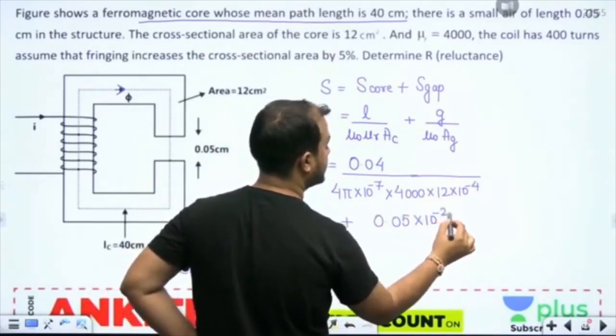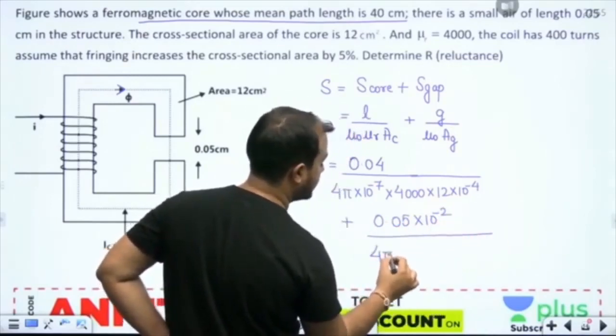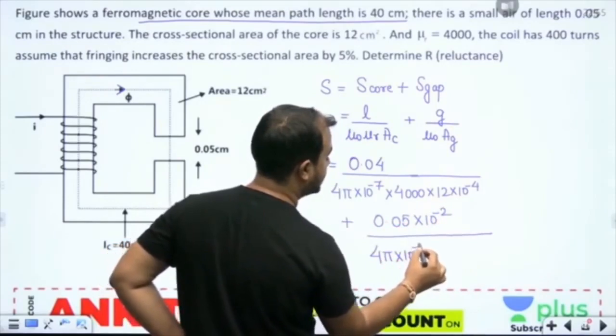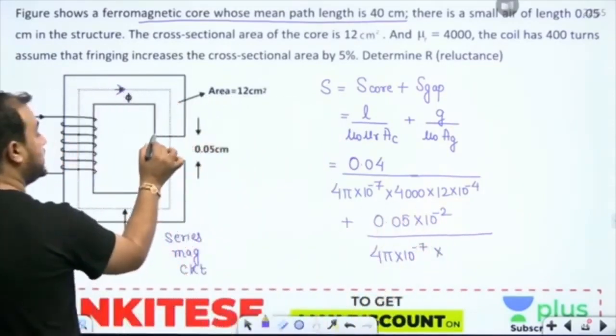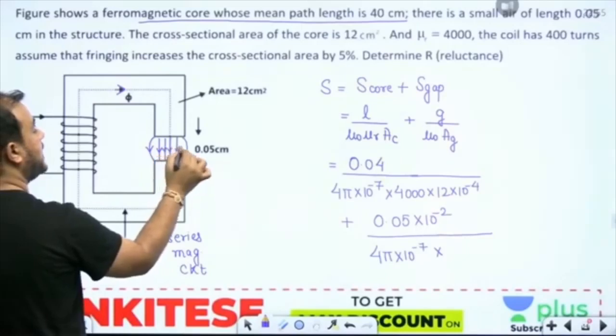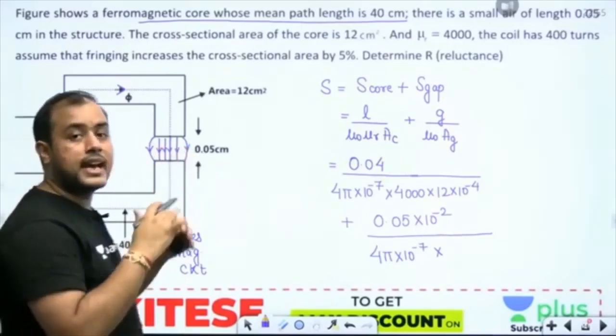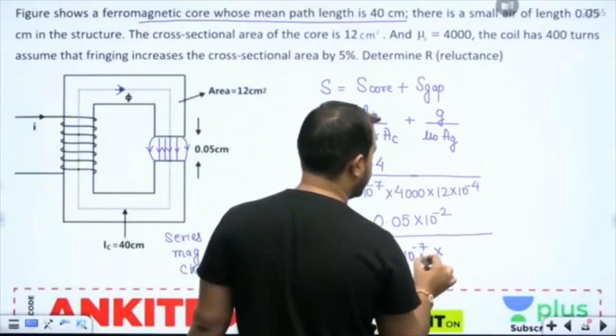But my friend, it says that the fringing increases the area by 5%. Fringing means that magnetic field lines will spread out. If the magnetic field lines are spreading out, the area increases.